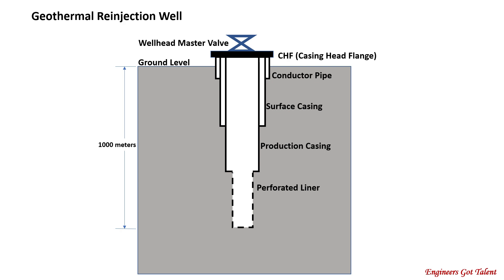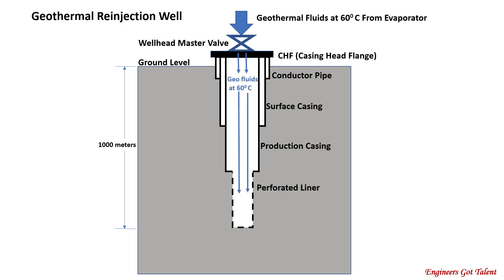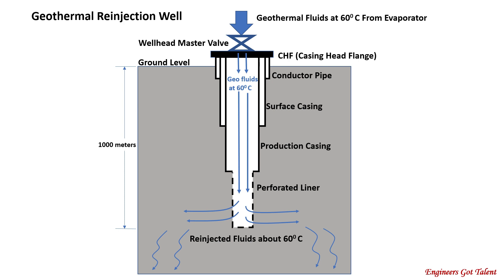To complete the binary process, the warm geothermal water fluid exiting the evaporator is injected back to the substrata at a depth of one thousand meters via a re-injection well. The re-injection well is drilled in an area farther away from the production well and farther away from the geothermal reservoir. The location of the re-injection well must contain permeable rocks to accept the re-injected geothermal water. The re-injection well has the same casing strings configuration as the production well. Strictly, there must be no underground link between the re-injection well and the production well, otherwise the re-injected water will cool down the production well and the geothermal reservoir, thus reducing the production well's output.